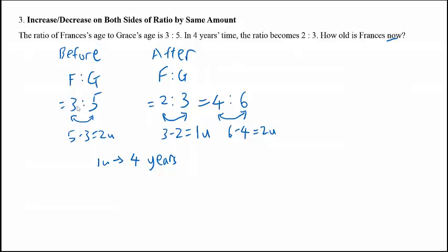So Francis now is 3 units. So the age of Francis now will be simply 4 times 3, which is 12 years old.